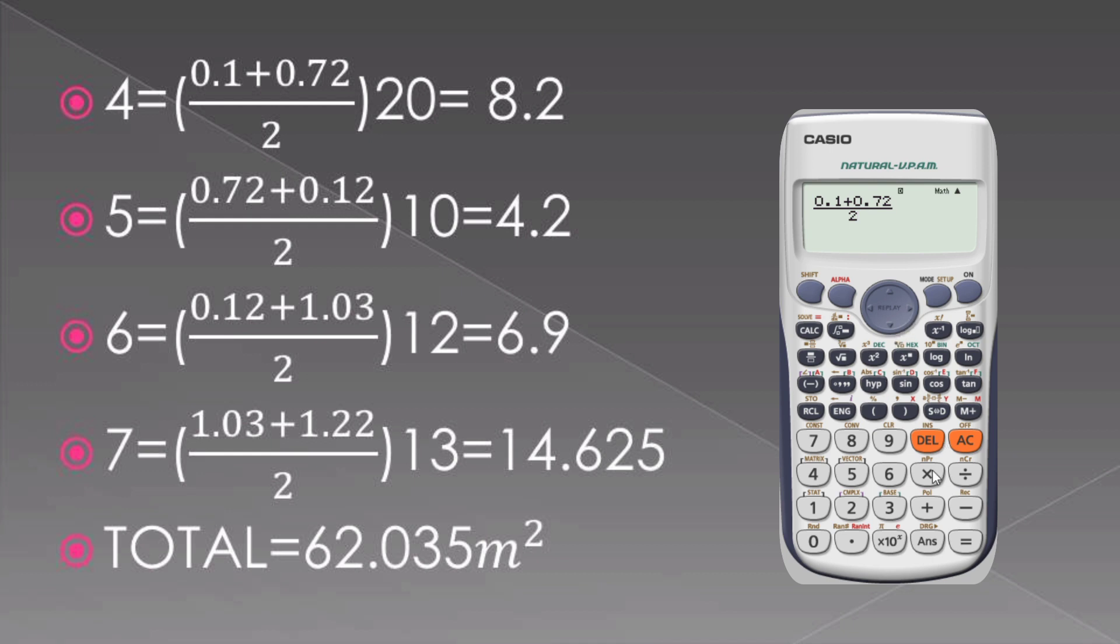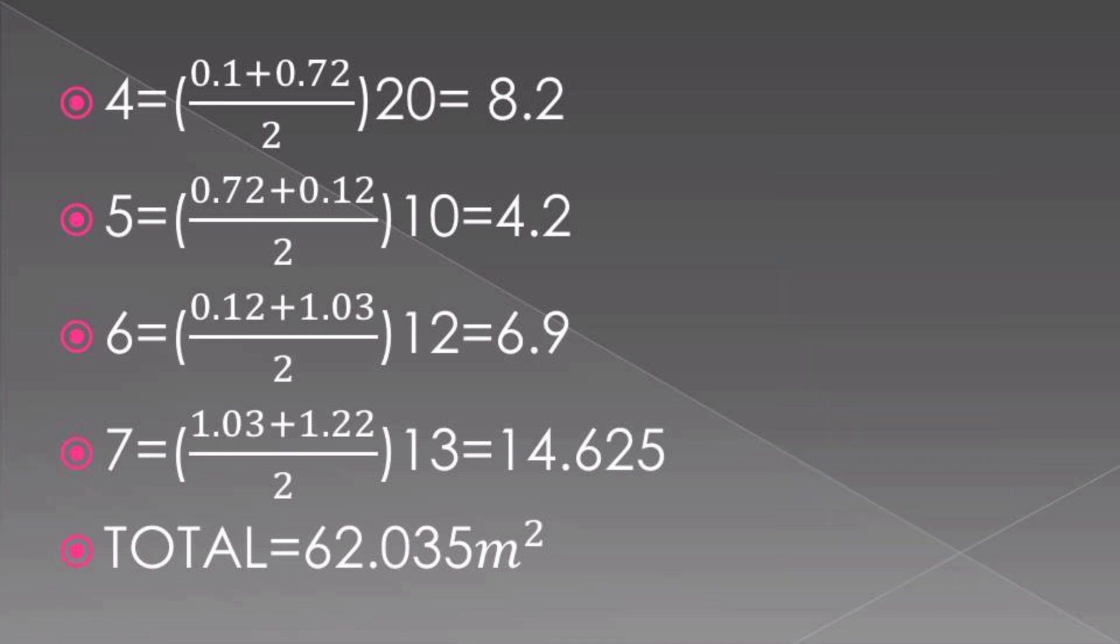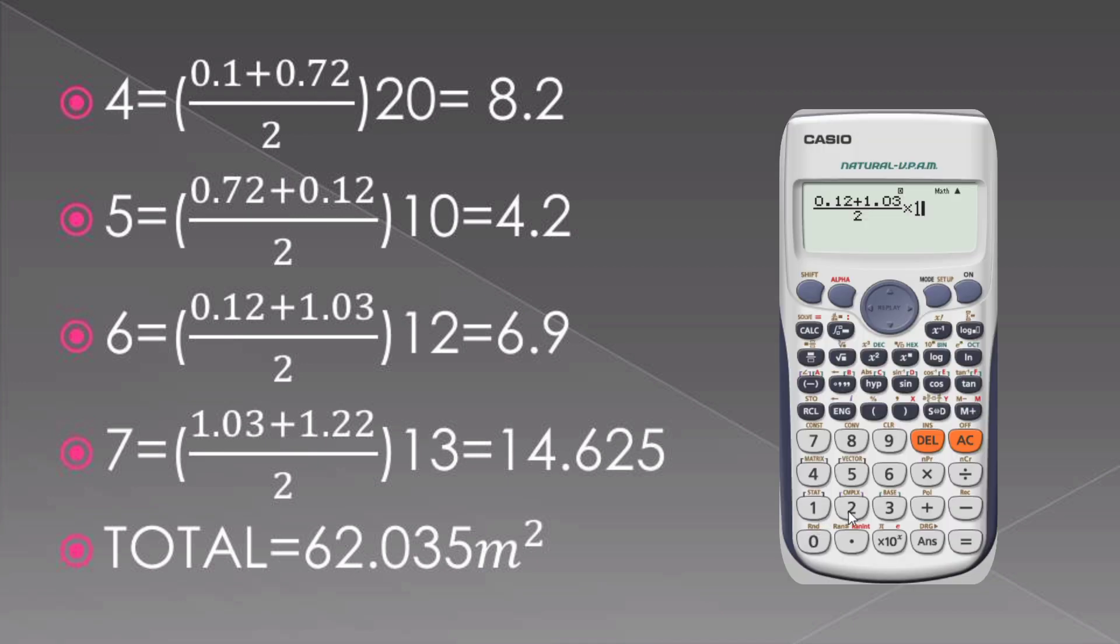My 20 is the distance between the intervals there, so where we have 11 plus 9 we get 20, and my final answer becomes 8.2. So you need to check that, how I did that fourth part. You need to check that. And then the fifth area, that is 0.72 plus 0.12 divided by 2 multiplied by 10, I will get 4.2. And then on our sixth area, that is 0.12 plus 1.03 divided by 2 multiplied by 12, we get 6.9.